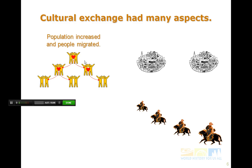We're looking at the concept of migration, and as populations increase, people begin to move out and look for places that can support them from a resource standpoint. We see, for example, after the Jewish diaspora, Jewish pockets or enclaves developing in places like China, India, Southeast Asia, and of course Europe. As people migrate, they take their ideas and their way of life with them.